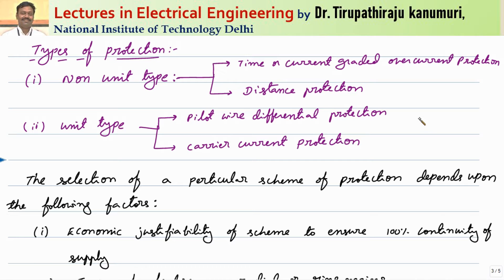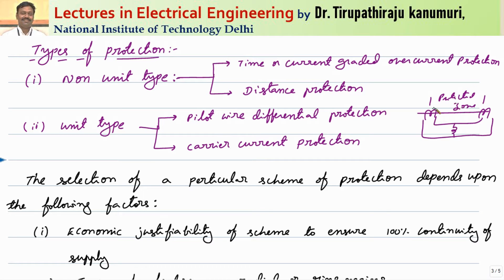In differential protection of a line, a CT is placed at each end point. The difference between the two points is used for protection — this is the protected zone. The relay will respond only to faults that happen within this particular zone, which is why it is called a unit. There are two types: pilot wire differential protection and carrier current differential protection. For non-unit type, protection is not limited to a particular zone and can extend over longer distances. These include time or current graded overcurrent protection and distance protection.